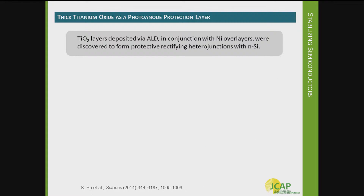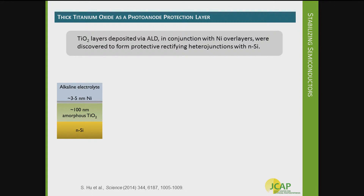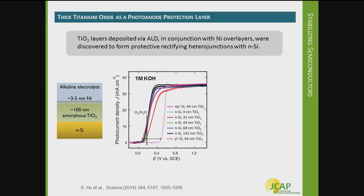This is where some of JCAP's work comes in. We focused on titanium dioxide as a photoanode protection layer. The first study published from JCAP focused on thicker TiO2 films about 100 nanometers thick, in conjunction with a nickel metal overlayer, as shown in this schematic. These were deposited on n-type semiconductors like n-silicon. Taking this tri-layer stack and testing it in 1 molar KOH electrolyte in a photoelectrochemical cell, you see rectifying curves indicating solar-driven water oxidation.